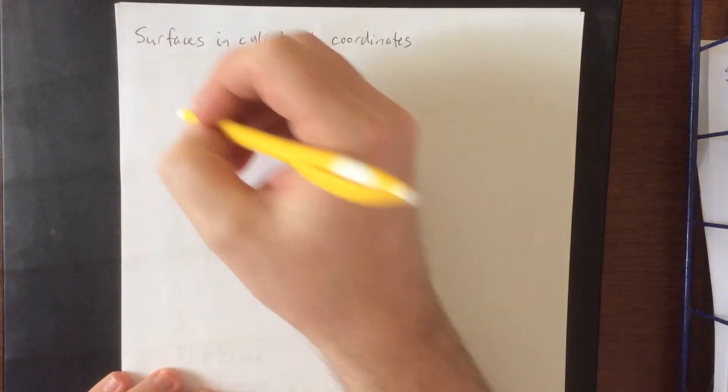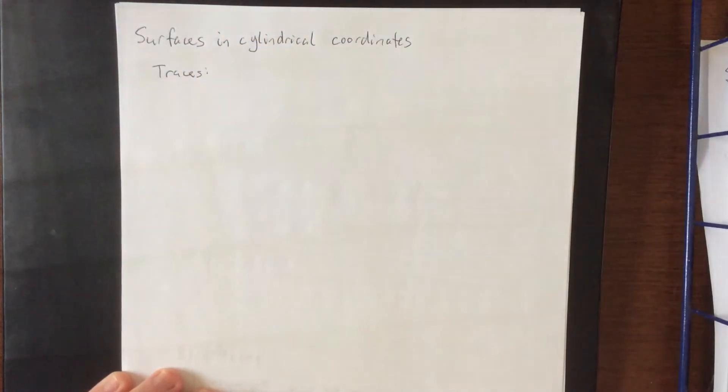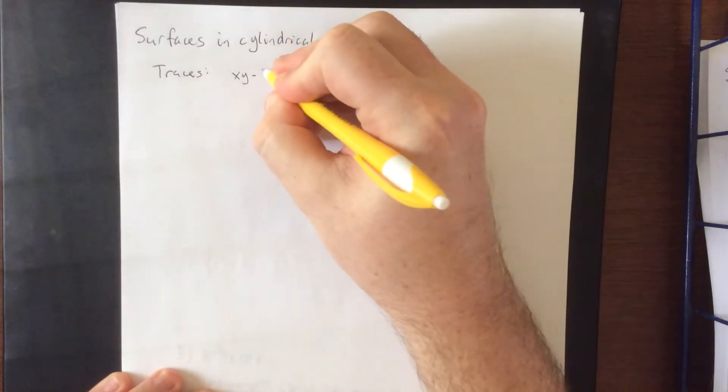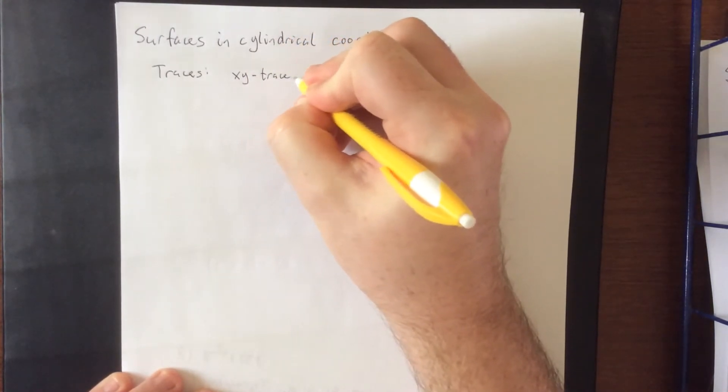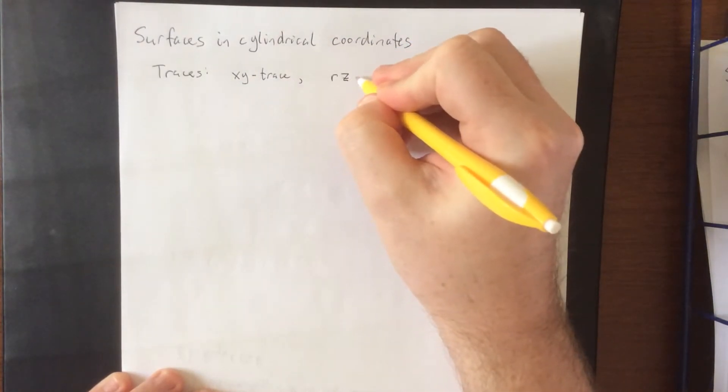When we were talking about 3D graphs in a previous section on quadric surfaces, we mentioned that taking a look at traces is usually a good way to envision what's going on in three dimensions. So what I wanted to do is introduce a couple of those traces and talk specifically about two that we're going to see from time to time: the XY trace and what I like to refer to as the RZ trace.